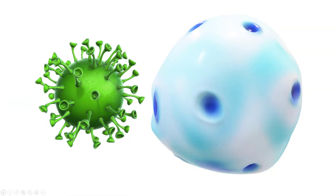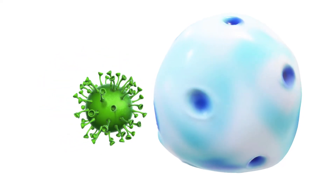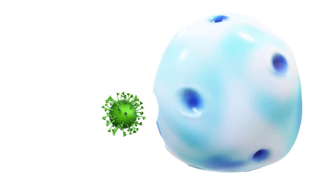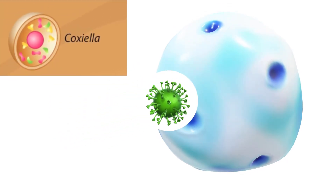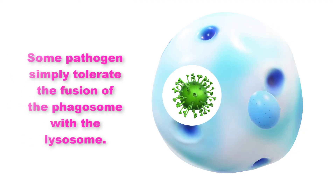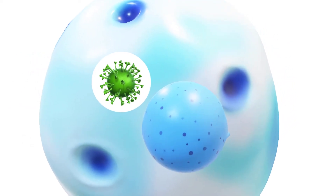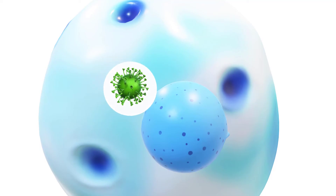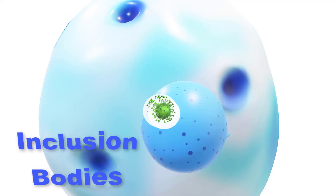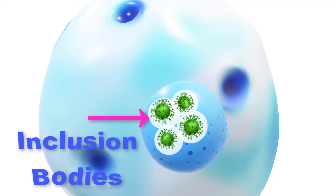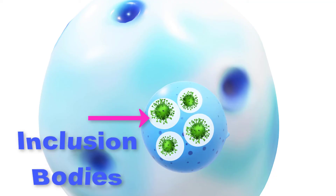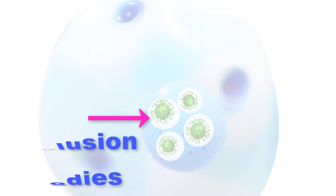A third way of escaping death inside a cell, performed by bacteria such as Coxiella, is simply to tolerate phagosome-lysosome fusion. In this 'grin and bear it' strategy, Coxiella bacteria reproduce in inclusion bodies in the acidic environment of the phagolysosome.